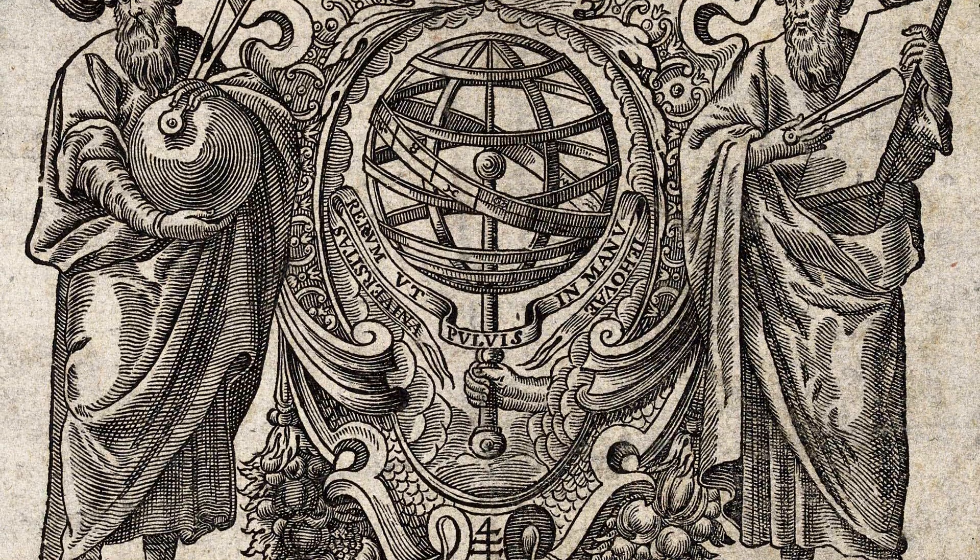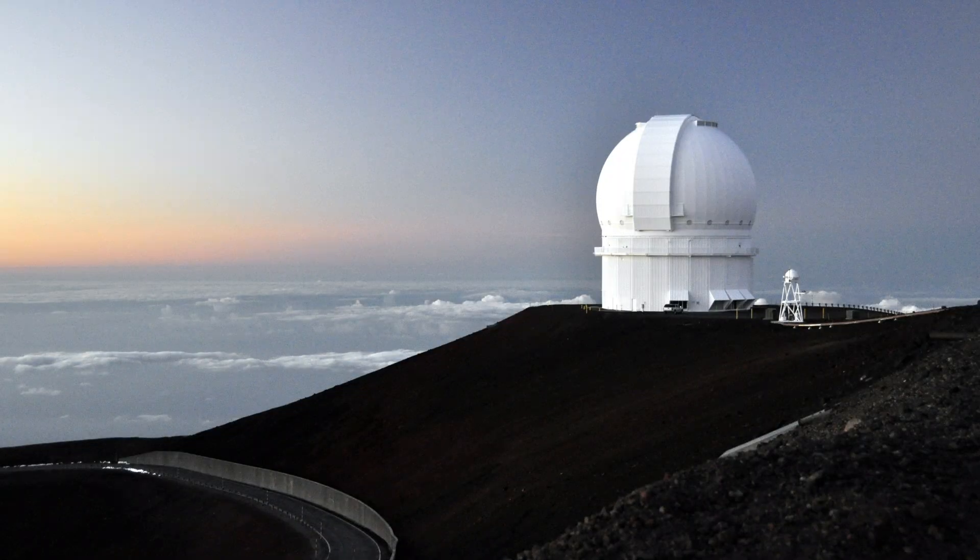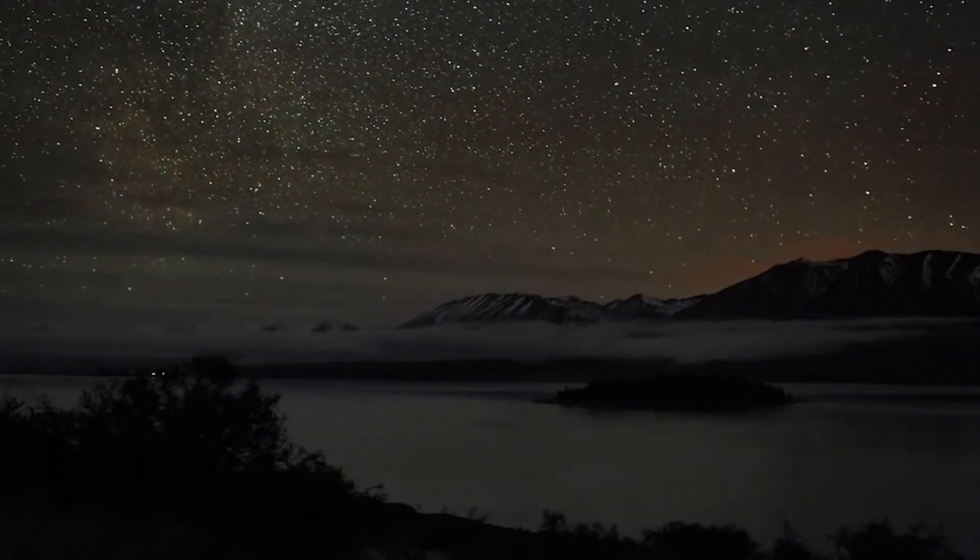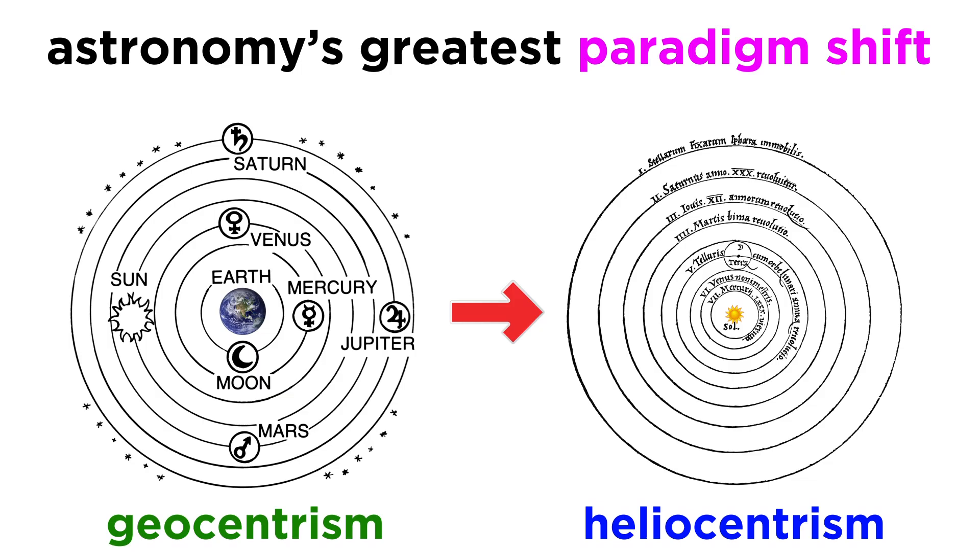Earlier in the series, we learned about the incredible history of astronomy, from ancient times all the way up until the twentieth century. A tremendous amount of knowledge was gathered about the solar system in that time, and as a result, the center of our universe shifted from the earth to the sun, with the planets moving around in elliptical orbits.